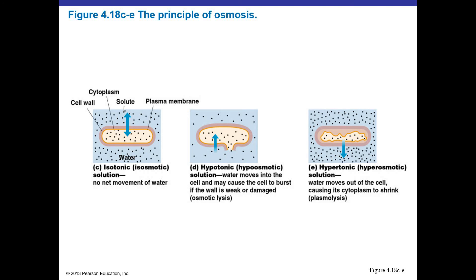The cell wall helps prevent bacteria from bursting when they enter hypotonic environments like pure water, though it won't completely prevent osmotic lysis if the pressure gets too high. In a hypertonic environment — high salt or high sugar outside the cell — water is pulled out of the cell, causing the cell to dehydrate. The cytoplasm shrinks and the plasma membrane starts to pull away from the cell wall. This is referred to as plasmolysis.